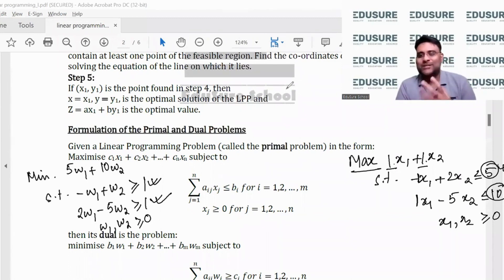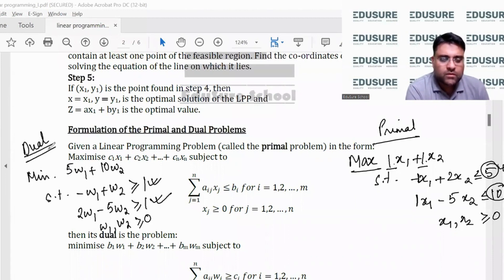So this is called the primal problem and this kind of transformation of the primal problem is called the dual.